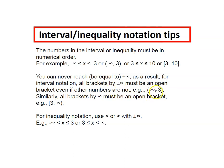So for example, (-∞, 3], including positive 3. The 3 has a closed bracket, but the negative infinity has an open bracket. All brackets by positive and negative infinity must be open.